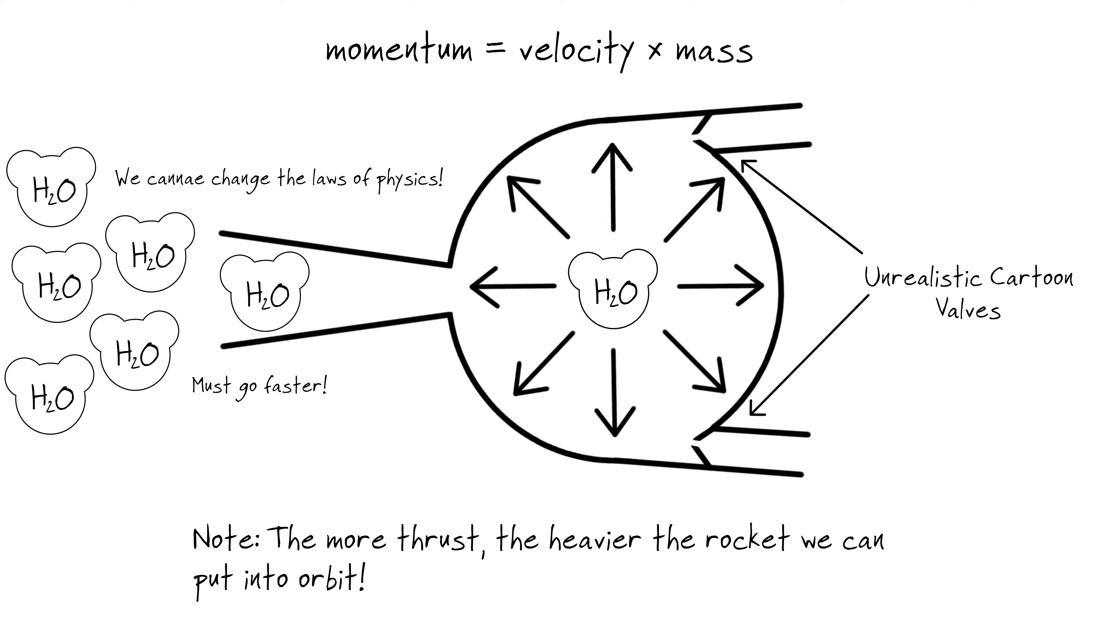However, as the combustion chamber pressure gets higher, it not only pushes the rocket forward, but starts to push back on the fuel and oxidizer flowing in. If this back pressure gets higher than the pressure in the fuel or oxygen tanks, the reaction stops and a rocket will stall. How do we get extremely high combustion chamber pressures without carrying an absurd and inefficient amount of pressurization gas?